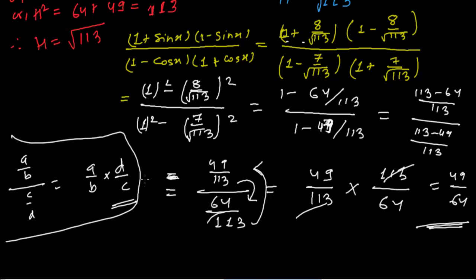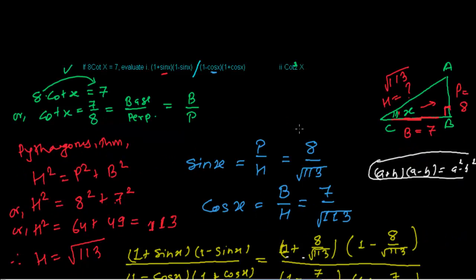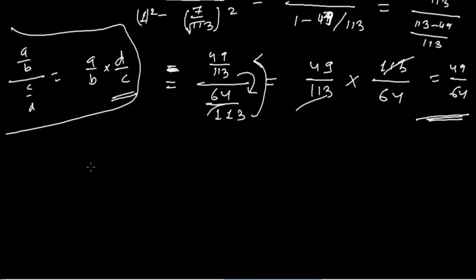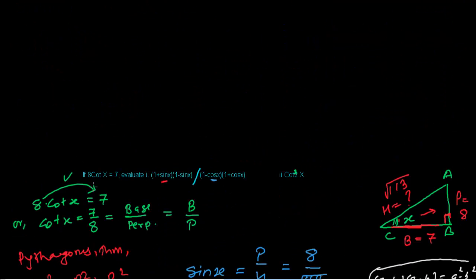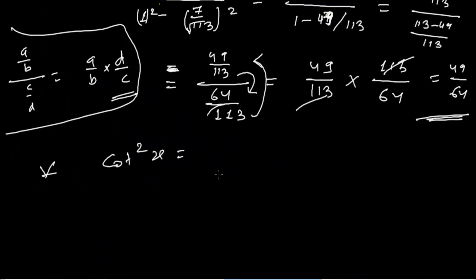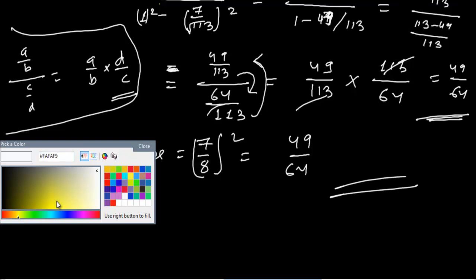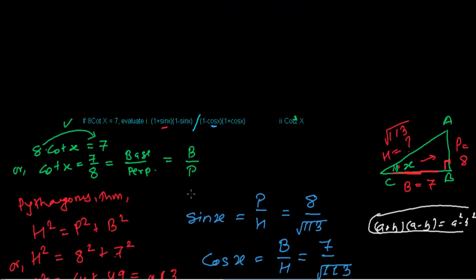Now let's solve the second question: cot²(x). This is simple — cot(x) is already given from the problem as 7/8, so cot²(x) = (7/8)² = 49/64. Notice that both answers are the same: 49/64, which confirms our work.